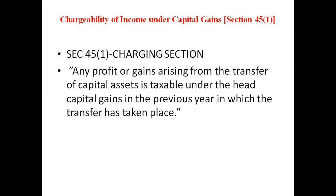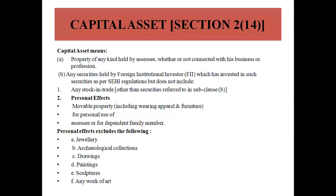The second topic is capital assets. Capital assets are defined under section 2 subsection 14. To understand capital gains, you must first understand capital assets. A capital asset means property of any kind held by an assessee, whether or not connected with his business or profession. It also includes any security held by a foreign institutional investor (FII) as per SEBI guidelines. However, it does not include stock in trade.